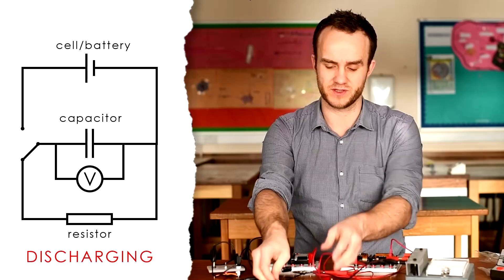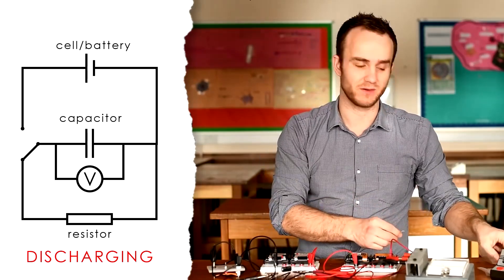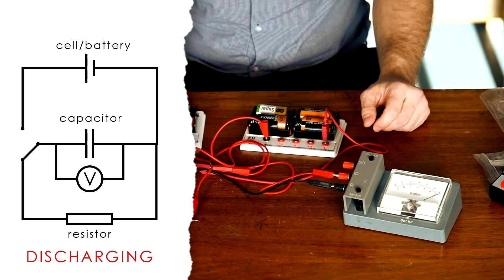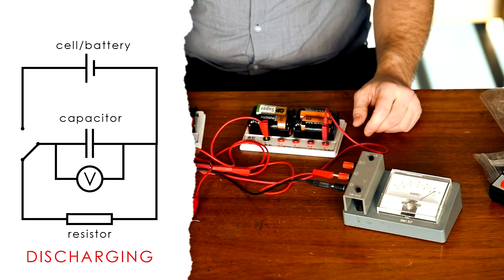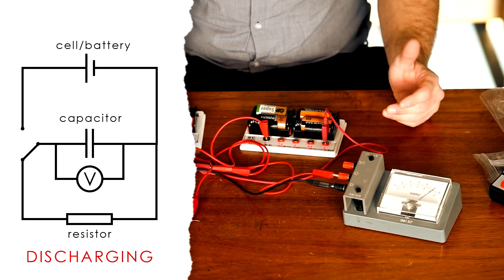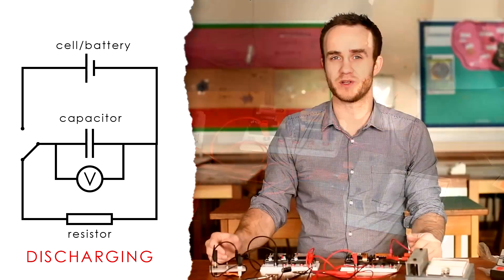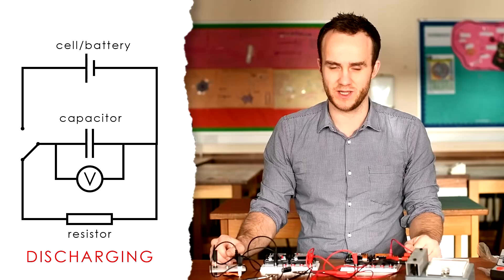Let's go for a really high resistance. Let's go for 10 kilo ohms. So I've charged the capacitor. Let's discharge it. Brilliant. Now the capacitor is discharging fairly slowly, not too slowly. And so we can start timing how long it takes to drop to a certain PD.